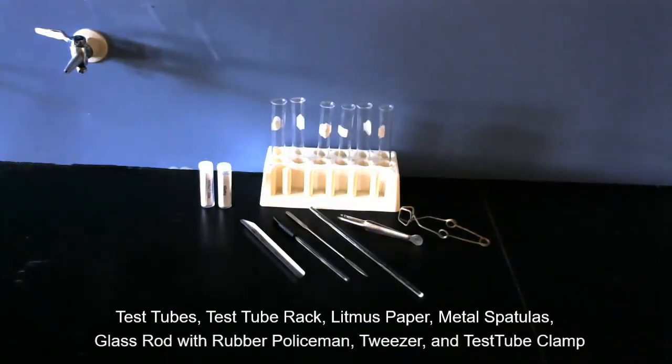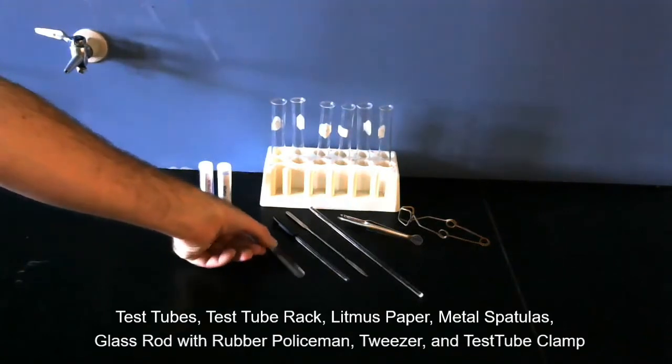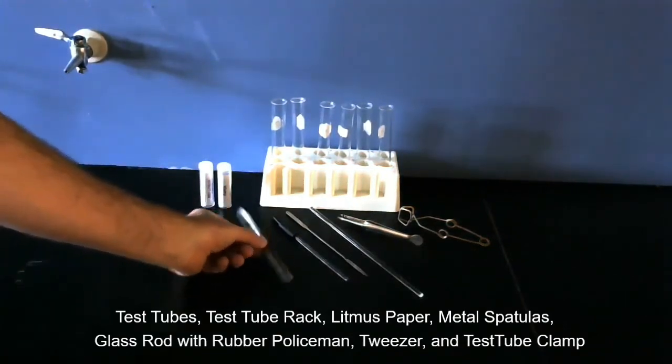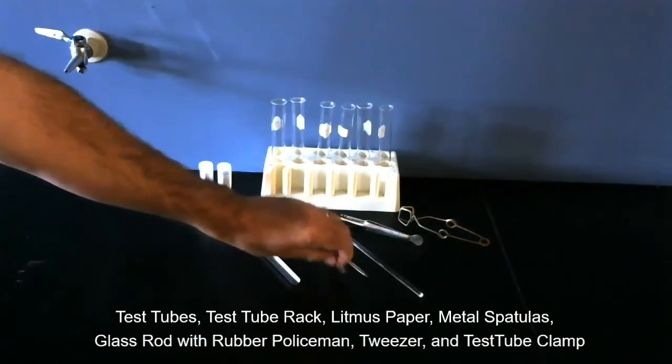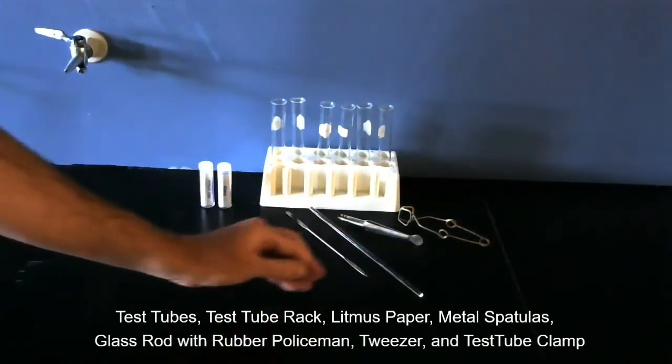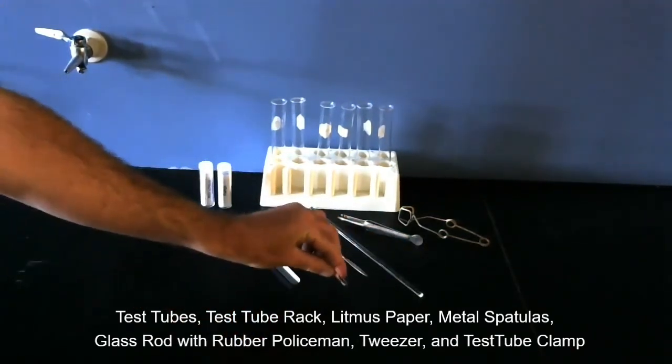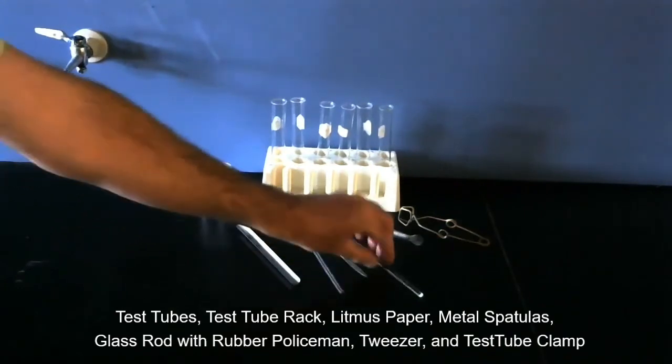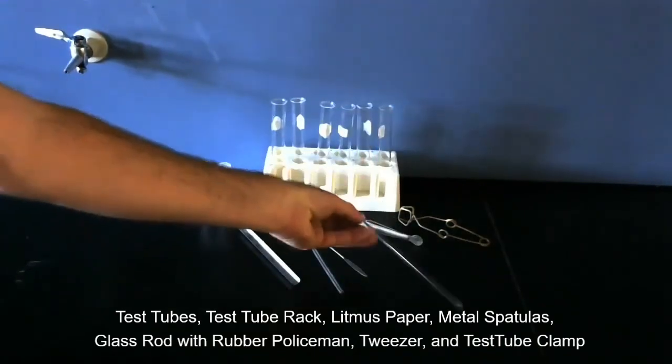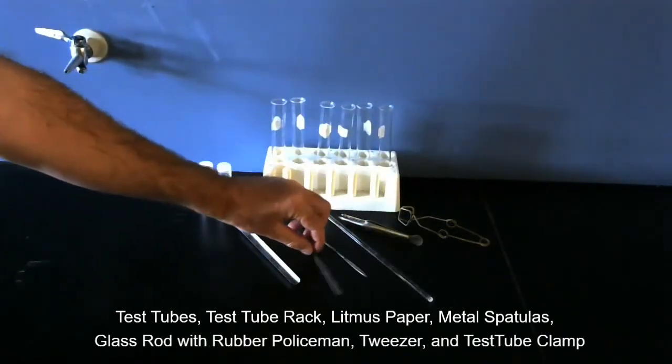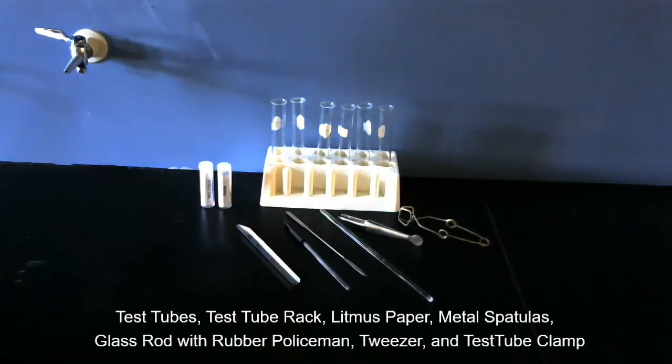This is a metal spatula used for scooping out solids. Here's a glass stirring rod with a rubber tip. They call that a rubber policeman. And here's a glass rod without that on it. The rubber policeman is for getting solids out and scraping them out.